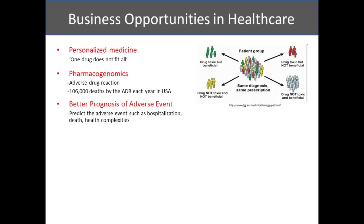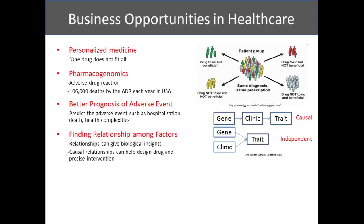Another potential application of diverse datasets is trying to predict adverse events for prognostic purposes. For example, if we have all different types of data, we can predict the chance of a particular patient being hospitalized in the next 30 or 60 days. Given that kind of predictive model, we can define different types of interventions to prevent such adverse events, which would reduce healthcare costs dramatically.